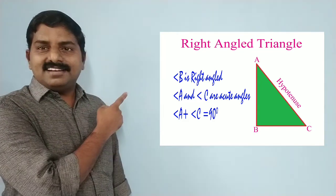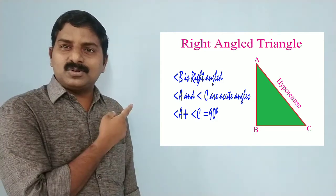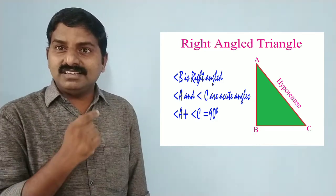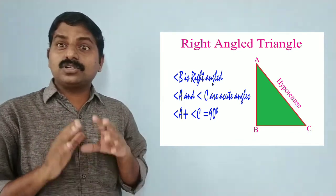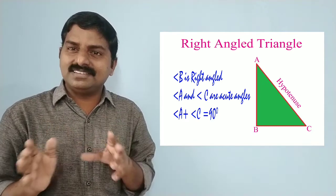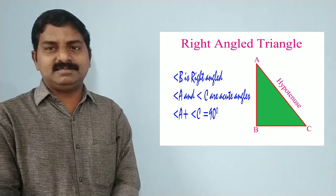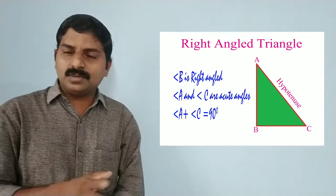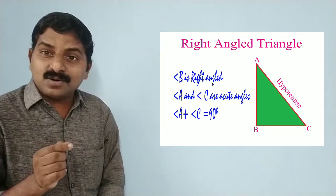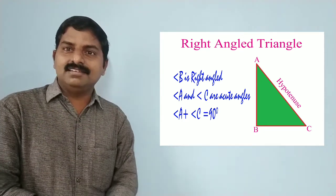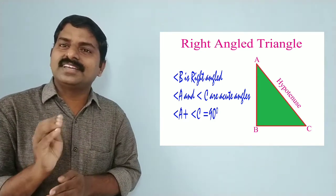In this triangle, triangle ABC is right-angled. Angle B is equal to 90 degrees. Then what about the remaining angles A and C? Since the total sum is equal to 180 degrees, the sum of angles A and C becomes 90 degrees. So it is an important point: in a right-angled triangle, one angle equals 90 degrees and the sum of the remaining two smaller angles is equal to 90 degrees.